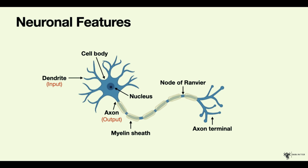This yellow substance surrounding the axon is myelin. Myelin is made up of fatty substances and it has a very important function in actually speeding up nerve conduction — we will go through this in the next lecture. The gap between individual myelin sheaths is called the node of Ranvier.